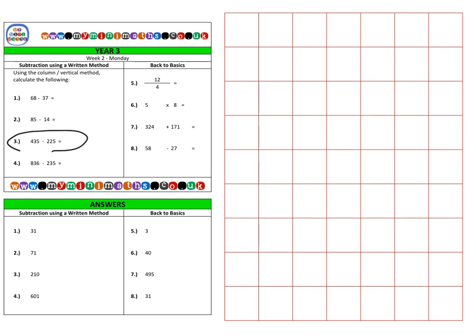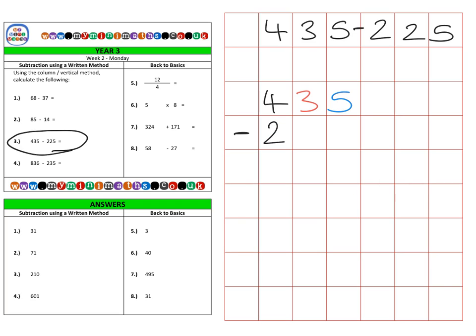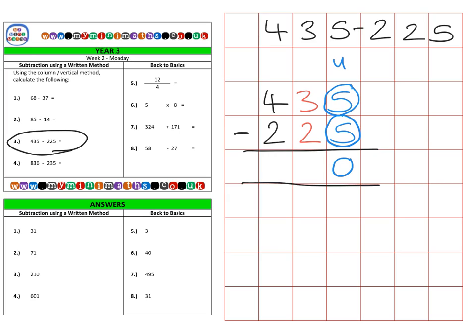Next is question three, where we use the hundreds column as well. We have 435 and we're going to subtract 225. Starting with our units: five units take away five units leaves us with zero — nothing, no units remaining.